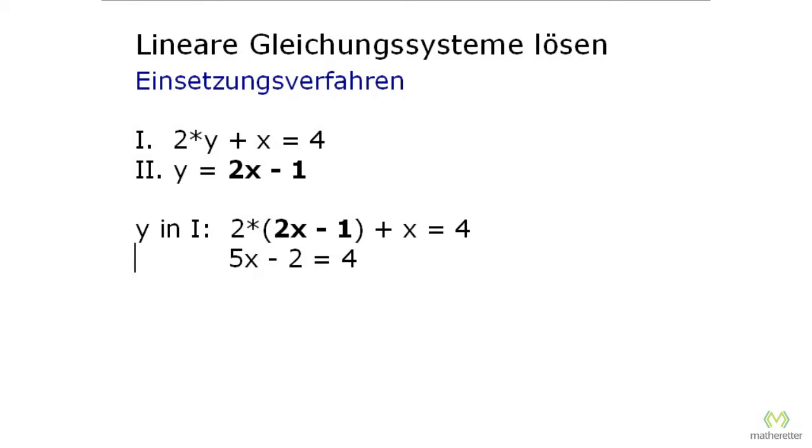And the minus 2, which we pull over with plus 2, so we get 5x, minus 2 falls away. Over here we have 4 plus 2, and that's 6. Then there is 5 times x, and we get rid of the 5 by simply dividing by 5. Then there is x equals 6 divided by 5, which equals 1.2.